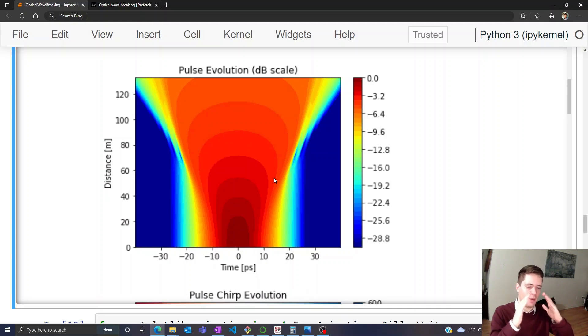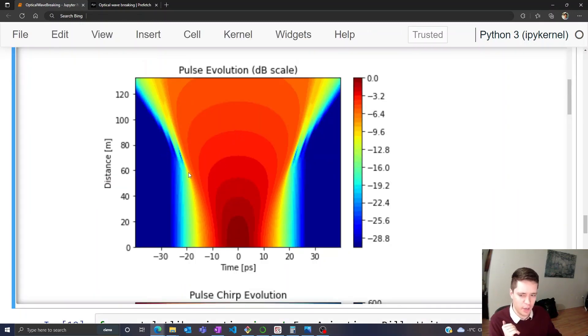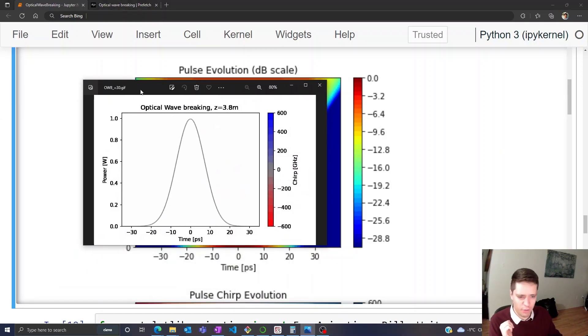Initially, we have a Gaussian pulse propagating forward, but as self-phase modulation sort of builds up, kicks in, we can see that that red light starts to propagate forward more and more, and we get almost like a square shape of the pulse over here. But to see that in a bit more detail, I actually created an animation that demonstrates this effect. So let's take a look at that.